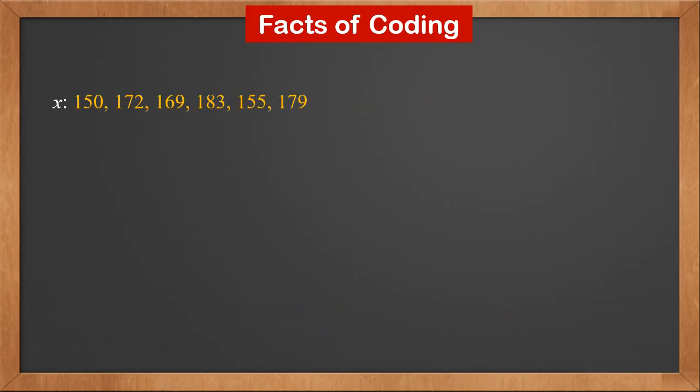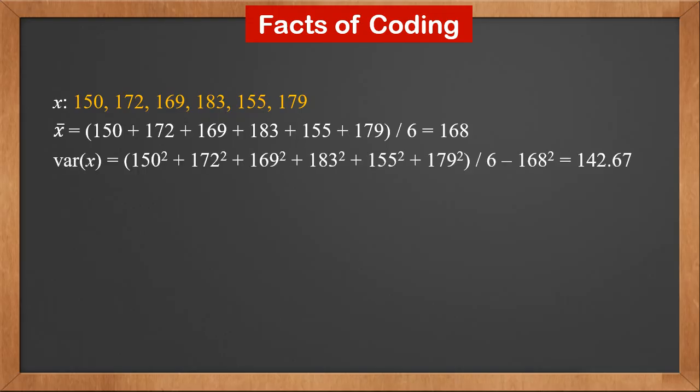Let's calculate the mean and variance of x and y. X bar is the sum of all x's, divided by 6, which is 168. Variance x is the sum of all squares, divided by 6, minus the square of x bar. It is 142.67.